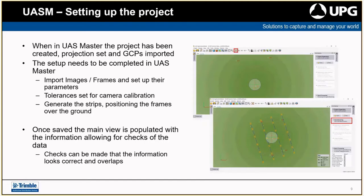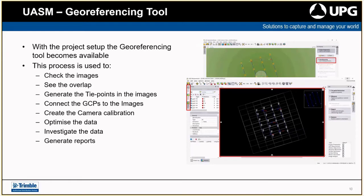Once you've saved the data, we now have access to the geo-referencing tool. UAS Master works through steps sequentially — it won't let you do a step if you haven't completed the previous needed step. When you open the geo-referencing tool, it shows you what the data is looking like — you can check the overlap of images and see where everything sits relative to one another. The first step is to generate tie points in the images, which automatically processes all images and creates points to tie them together, working at common points between photos.